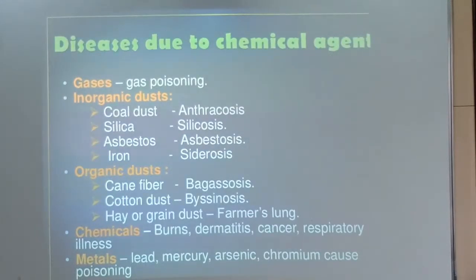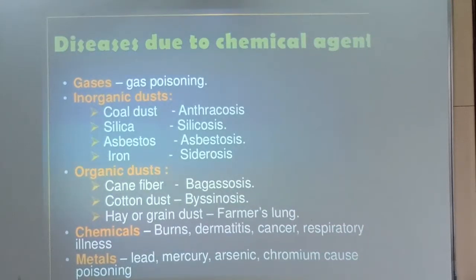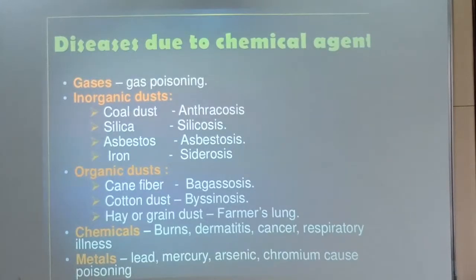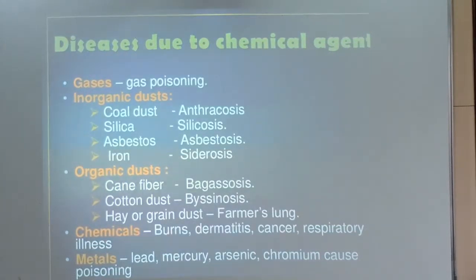Chemical agents exist in different forms. Gases cause gas poisoning. Inorganic dusts such as coal dust, silica dust, asbestos dust, and iron dust cause pneumoconiosis including anthracosis, silicosis, asbestosis, and siderosis. Organic dusts like cane fibre cause bagassosis, cotton dust causes byssinosis, and hay or grain dust causes farmer's lung. Chemicals can directly cause burns, dermatitis, cancer, and respiratory illnesses. Metals such as lead, mercury, arsenic, and chromium cause poisoning.